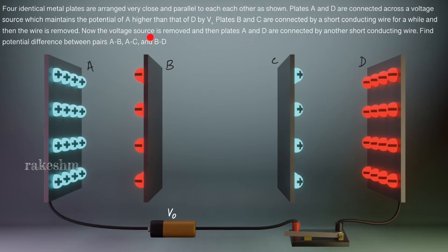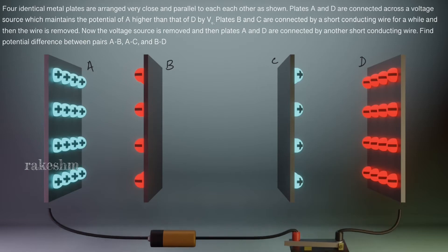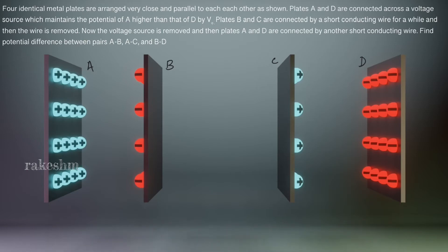Now the voltage source is removed, so let us remove this voltage source also. And then plates A and D are connected by another short conducting wire.